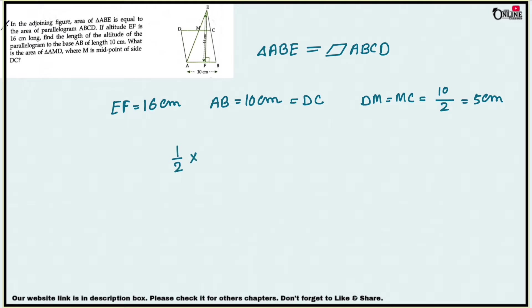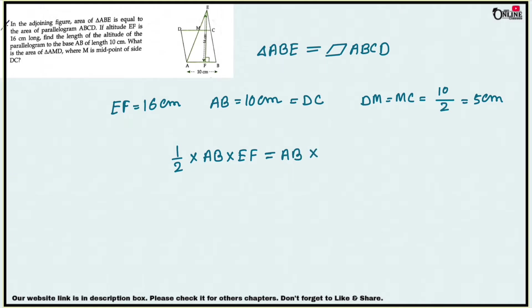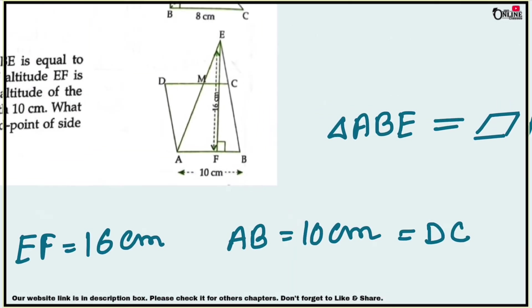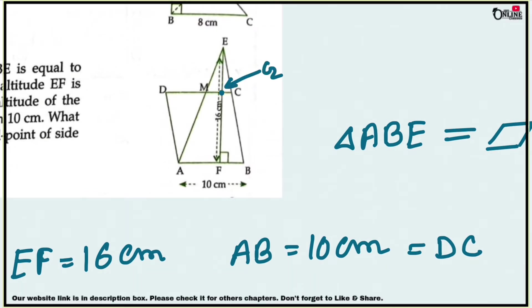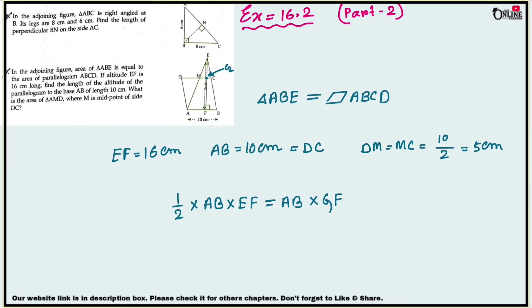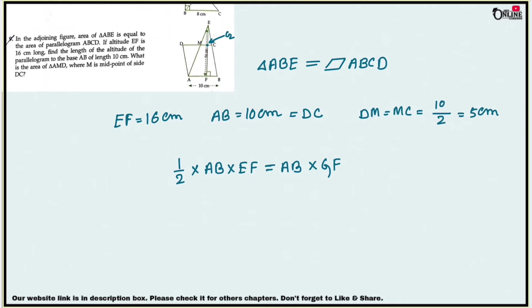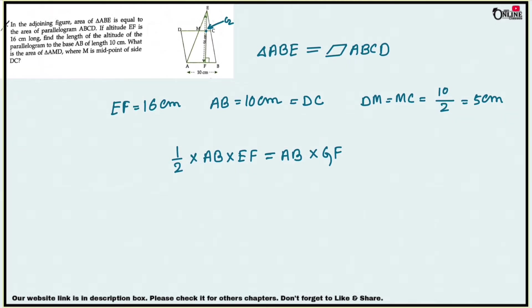For the triangle, the formula is half times base AB times height EF. For the parallelogram, the formula is base AB times height GF, where G is the foot of the altitude. Since the areas are equal, AB cancels out, giving us half times EF equals GF. With EF equal to 16, GF equals 8 centimeters.